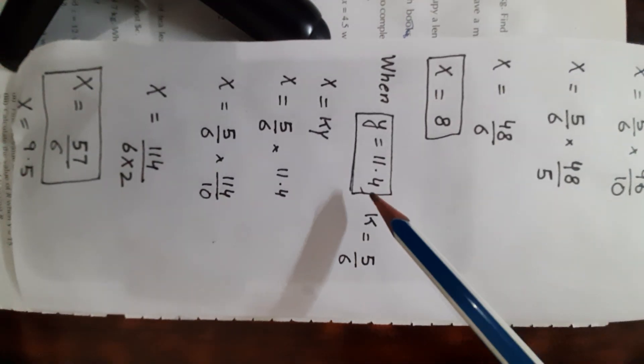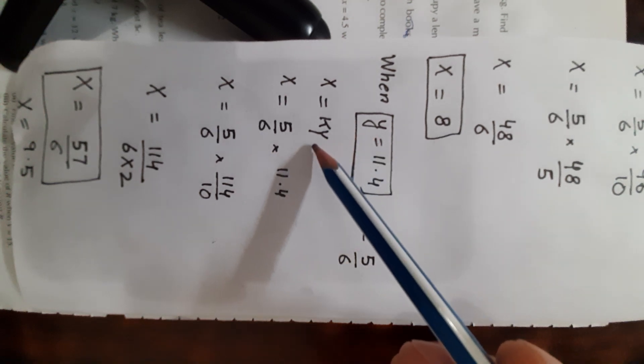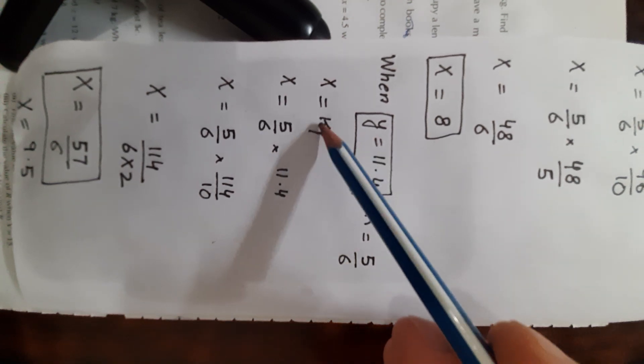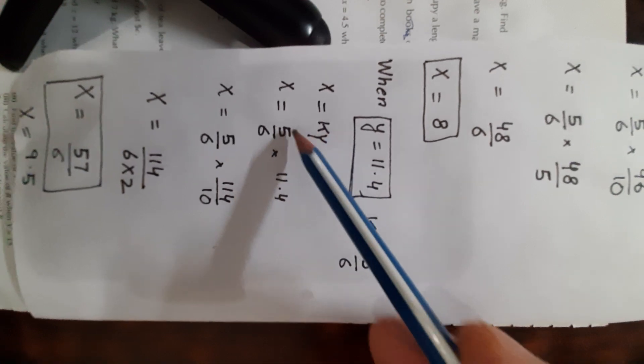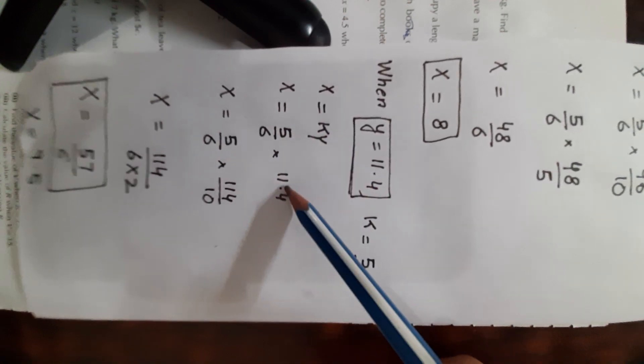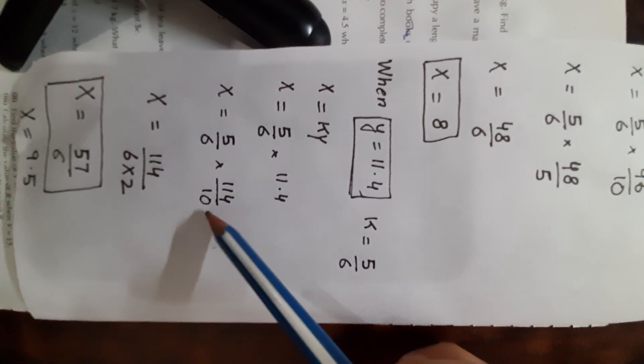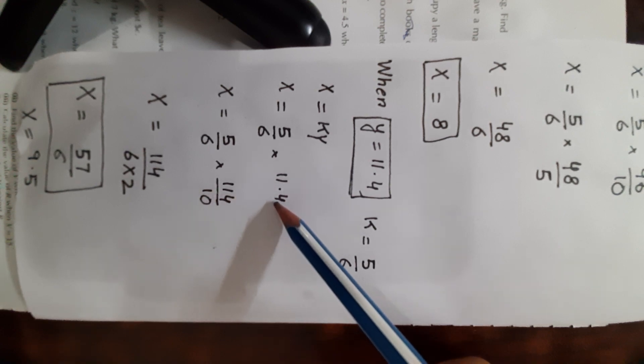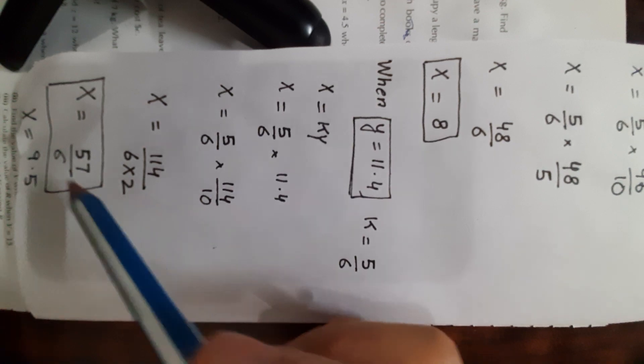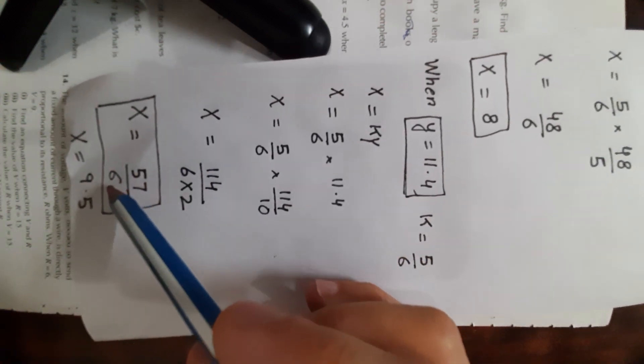The last value: y is 11.4, find x. Using x equals ky with k equal to 5/6 and y equal to 11.4 written as 114/10: after simplification x equals 57/6, which equals 9.5. So when y is 11.4, x equals 9.5.